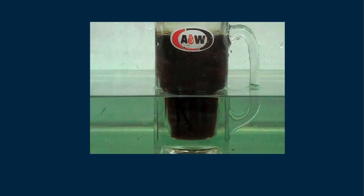When the mug is partly in water, what's happening? Light from the mug through the water doesn't speed up as fast as when through air. With less refraction, we get a better view of the amount of root beer in the mug.